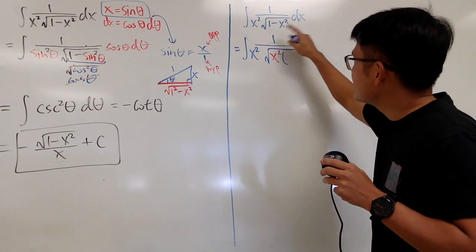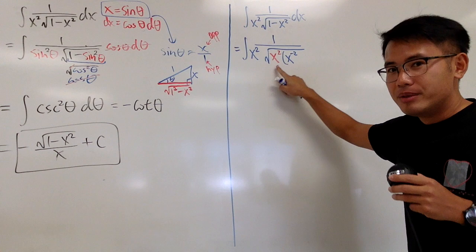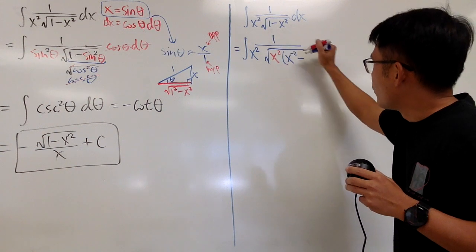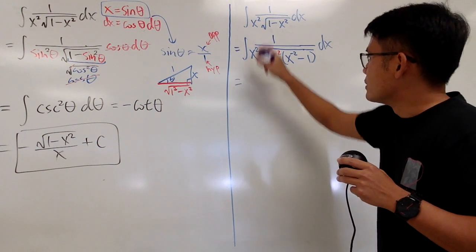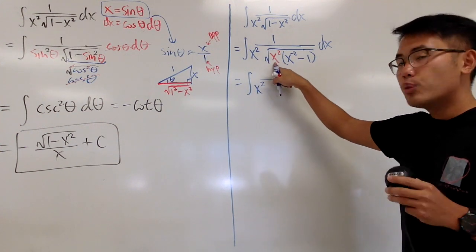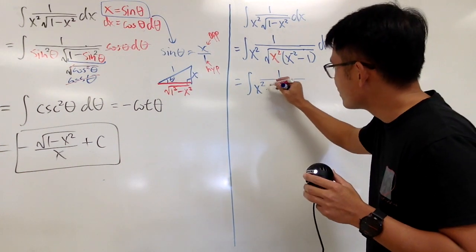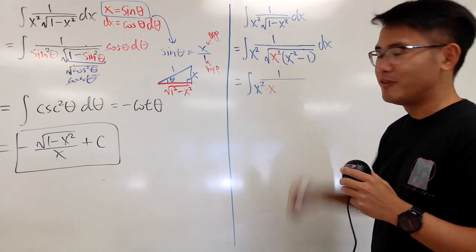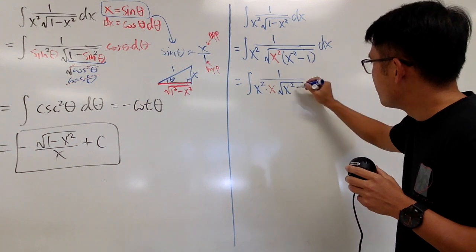When we factor out x squared, the first term becomes x to the negative 2 power (since x squared times x to the negative 2 gives 1) and the second term is just minus 1. Inside the square root we now have x squared times (x to the negative 2 minus 1), and the square root of x squared pulls out as x to the first power.